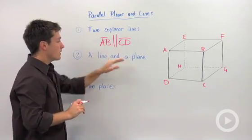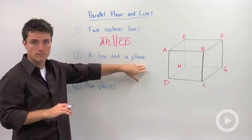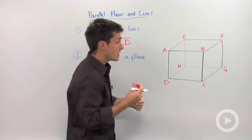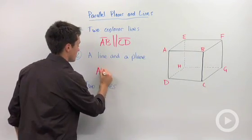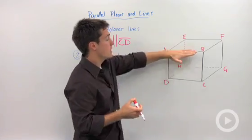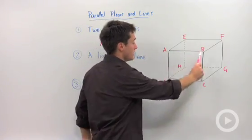Now what about a line and a plane? How can those be parallel? Well, taking that same plane ABCD, if I took one edge, let's say AB, line segment AB intersects this plane ABCD.